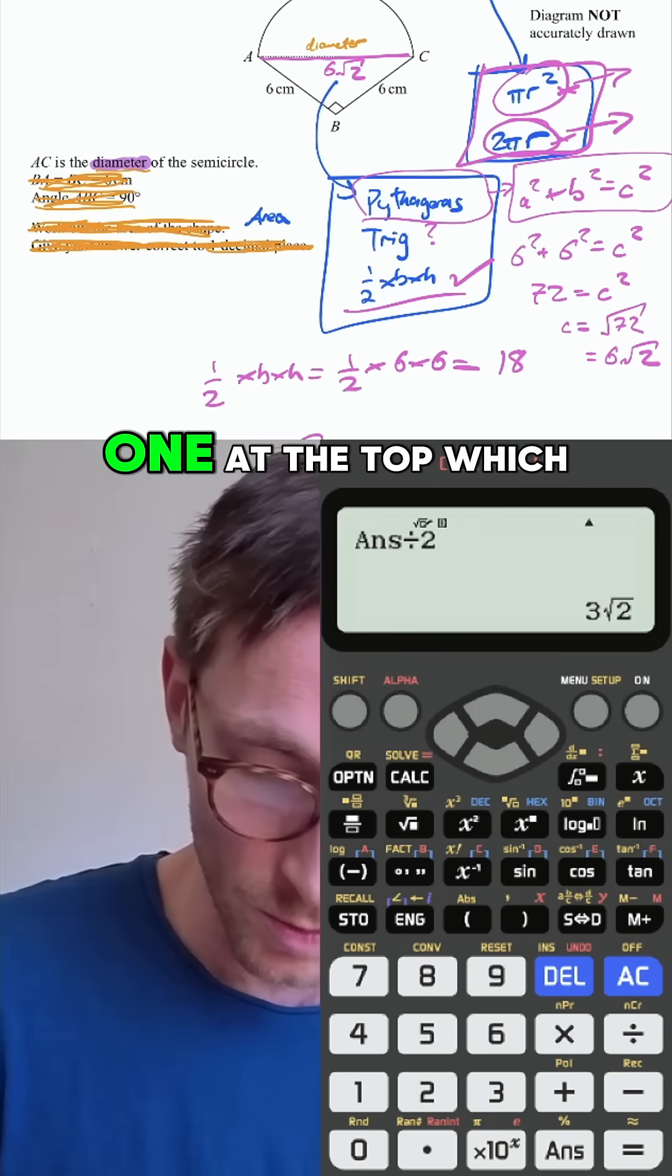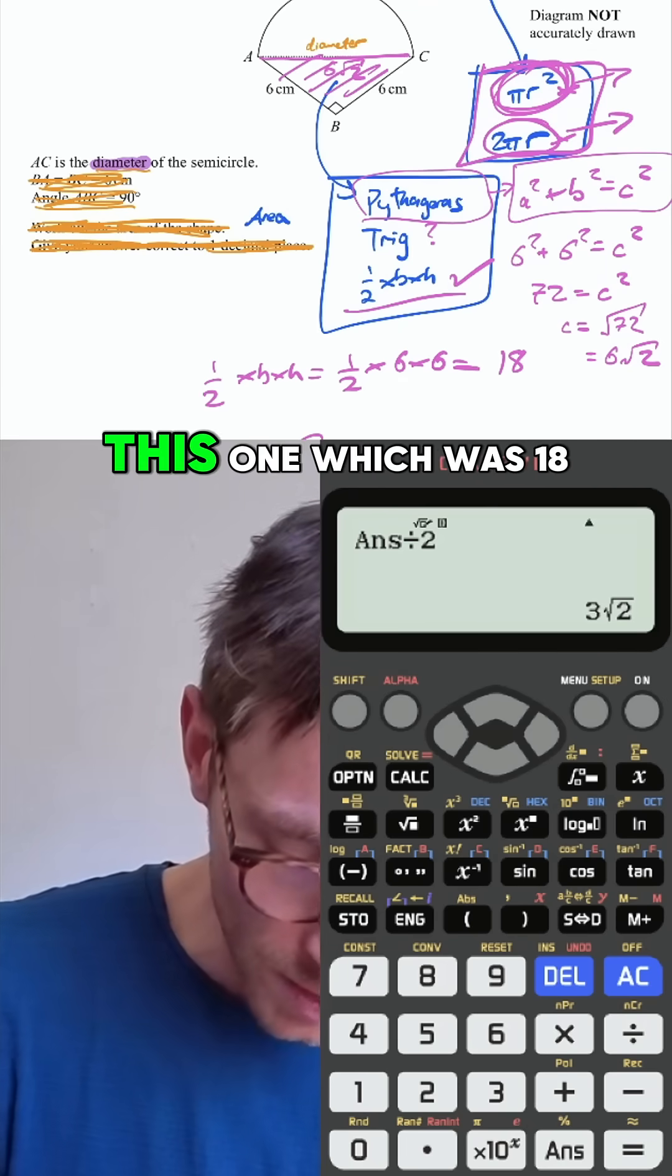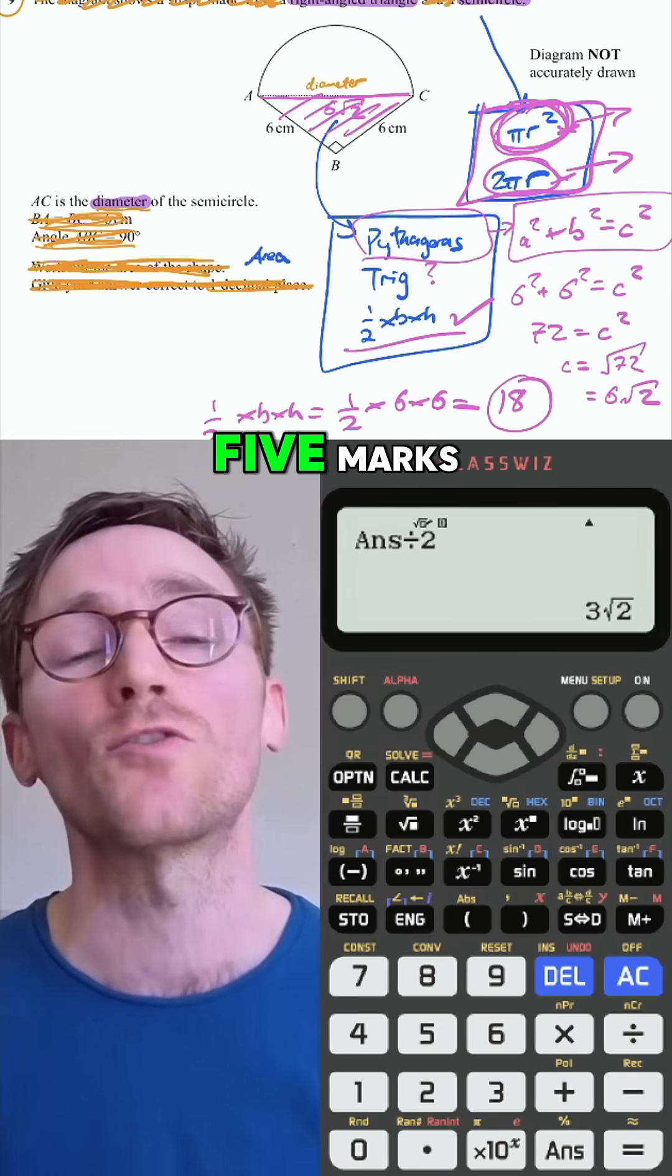Here the question was area. So we're going to do this one at the top, which is the area. You do that, you're going to, oh, I've got the area of this one, which was 18. Oh, and now I've got the area of the other one. Bang, there you go. You've got five marks.